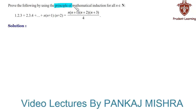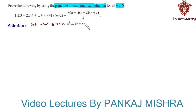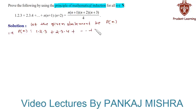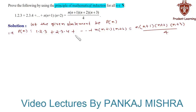Prove the following by using the principle of mathematical induction for all n belonging to natural numbers. We are given an equation and need to prove it by mathematical induction. Let the given statement be P(n), such that 1·2·3 + 2·3·4 + ... + n(n+1)(n+2) equals n(n+1)(n+2)(n+3) divided by 4.